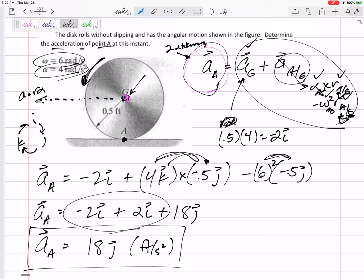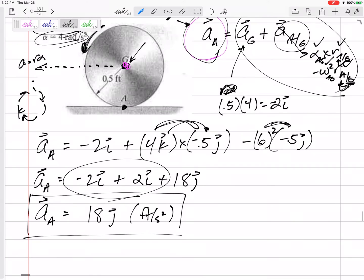The acceleration of that point on a wheel that is rolling without slipping is going to be in the J direction. Could we have thought about that? What if I put a light, and I've done this, maybe I should make a video about this.